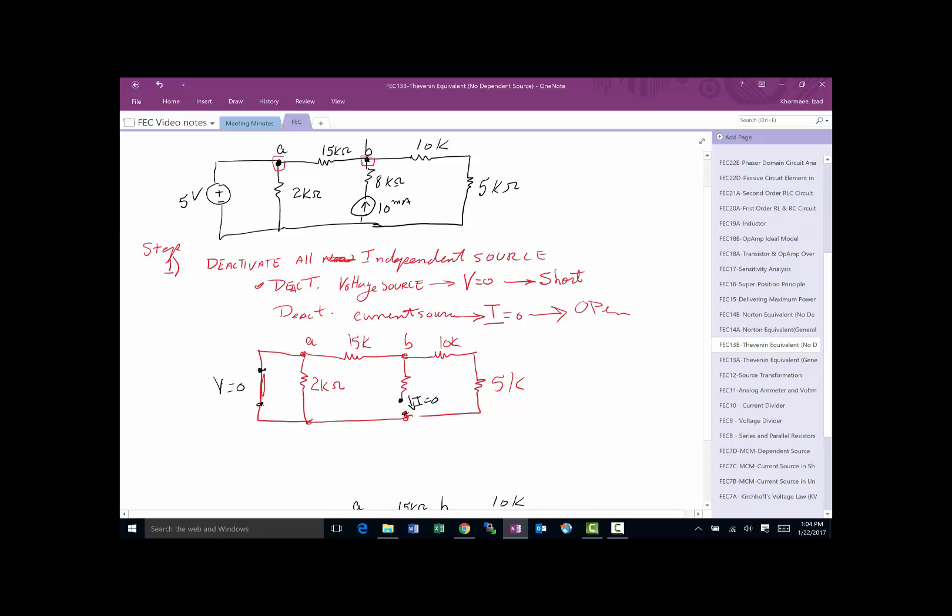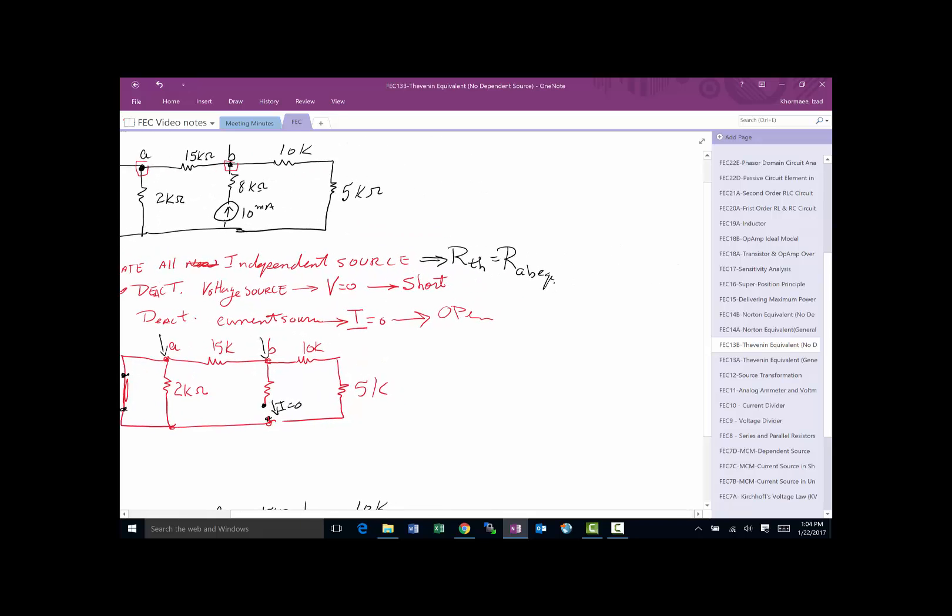Okay. So now, we're ready. Well, now, what? What is the end result of step one? It basically says deactivate all the independent sources. And then, if you do that, R_TH would be equal to whatever the R_AB equivalent is. So as I'm looking through these points, whatever the R equivalent is, it's going to be R_TH.